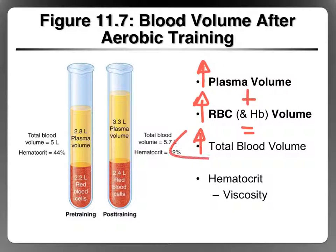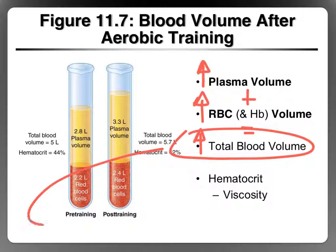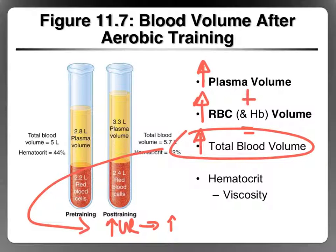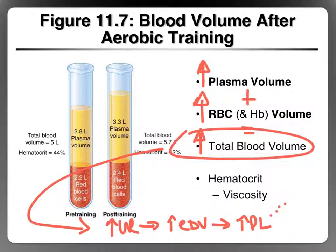An increase in total blood volume — both an increase in plasma volume and an increase in RBC volume — contributes to an increase in total blood volume, which increases venous return. An increase in venous return increases EDV, which increases preload, which increases left ventricular contraction strength and left ventricular pressure (P1), increasing the pressure gradient between the left ventricle and the aorta, and therefore increasing stroke volume.